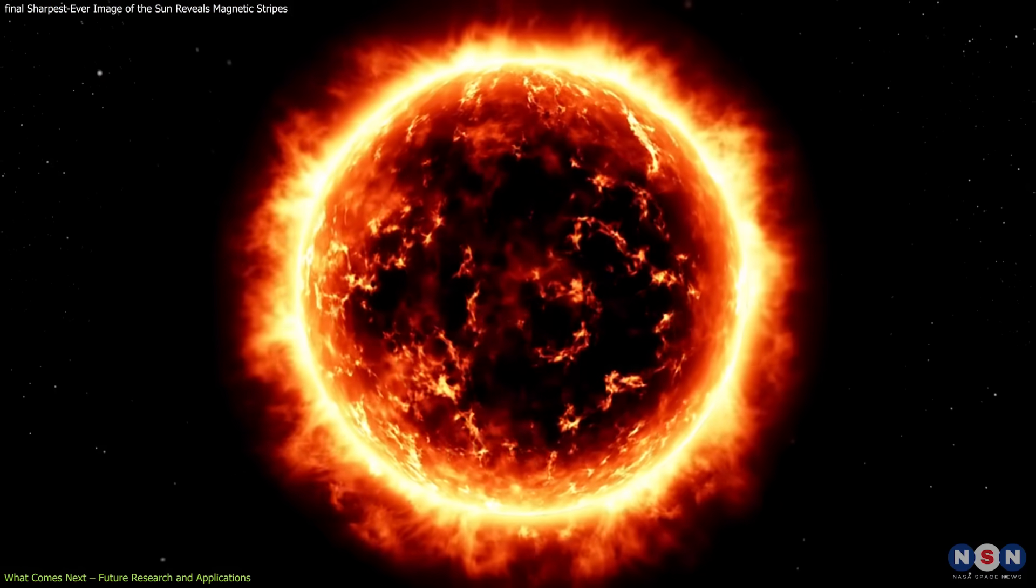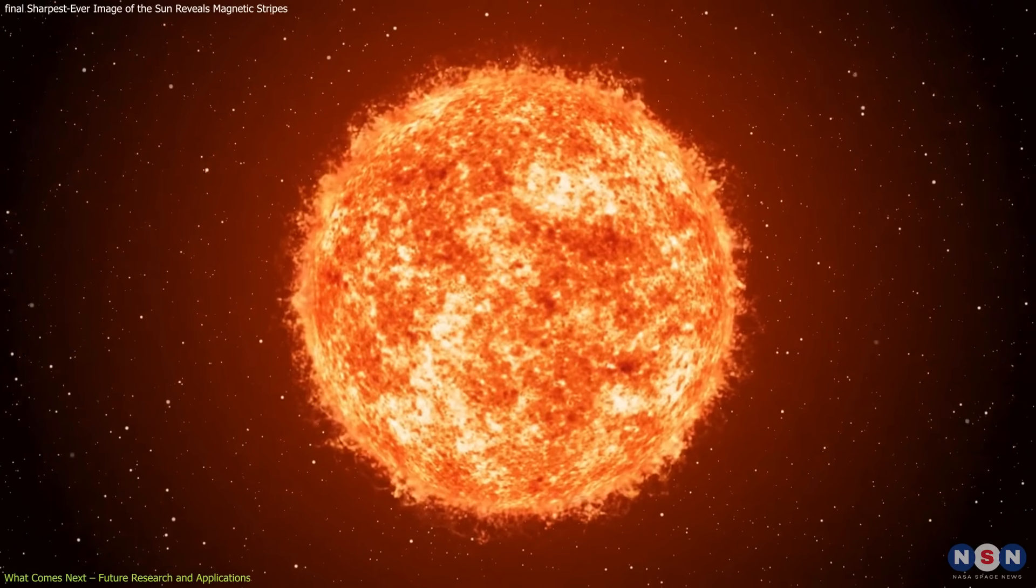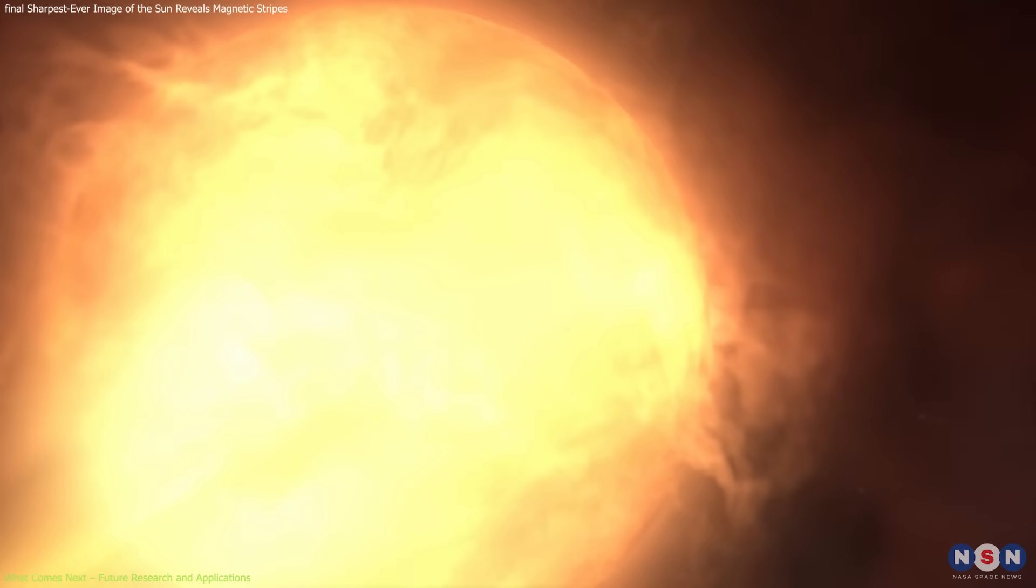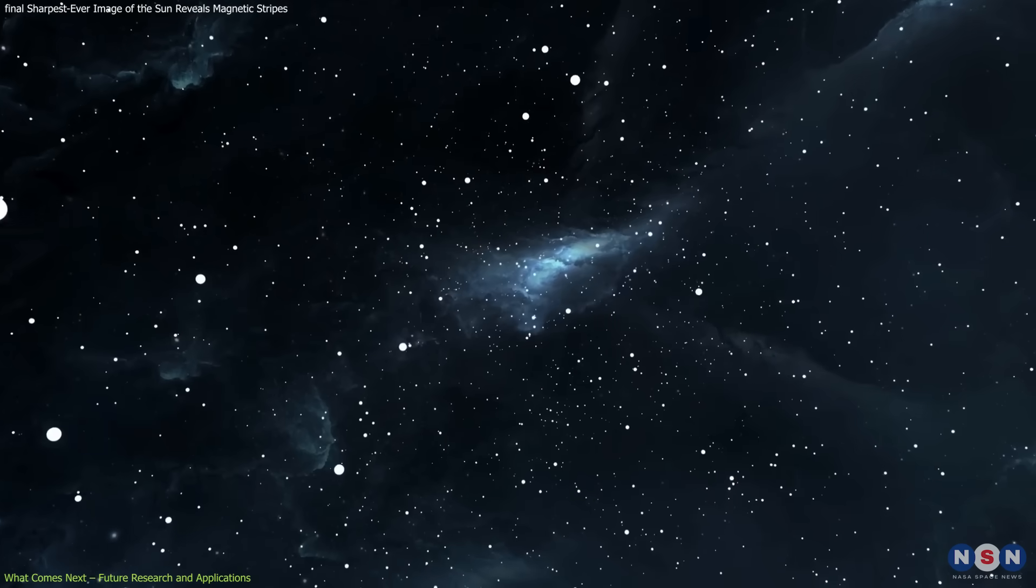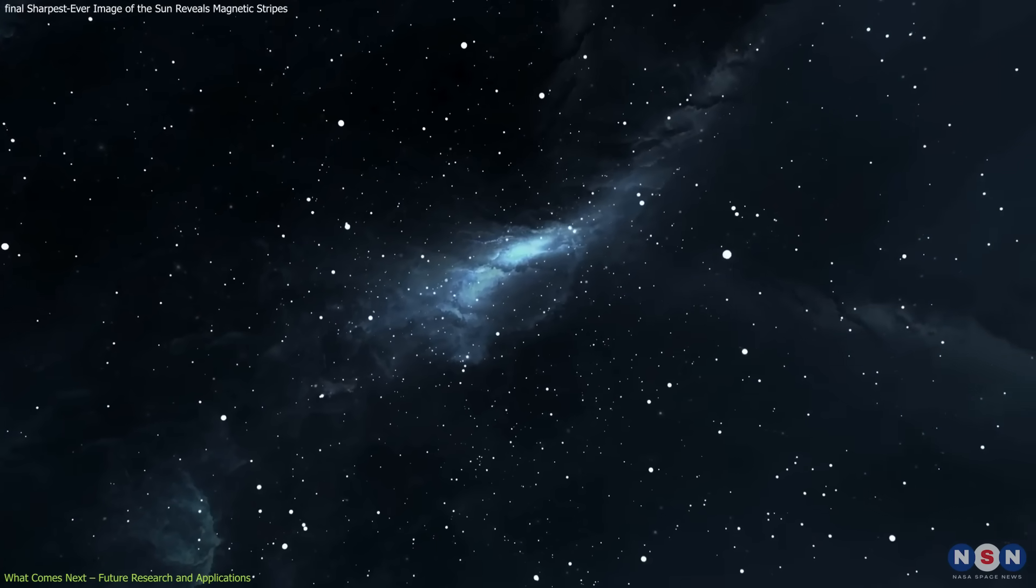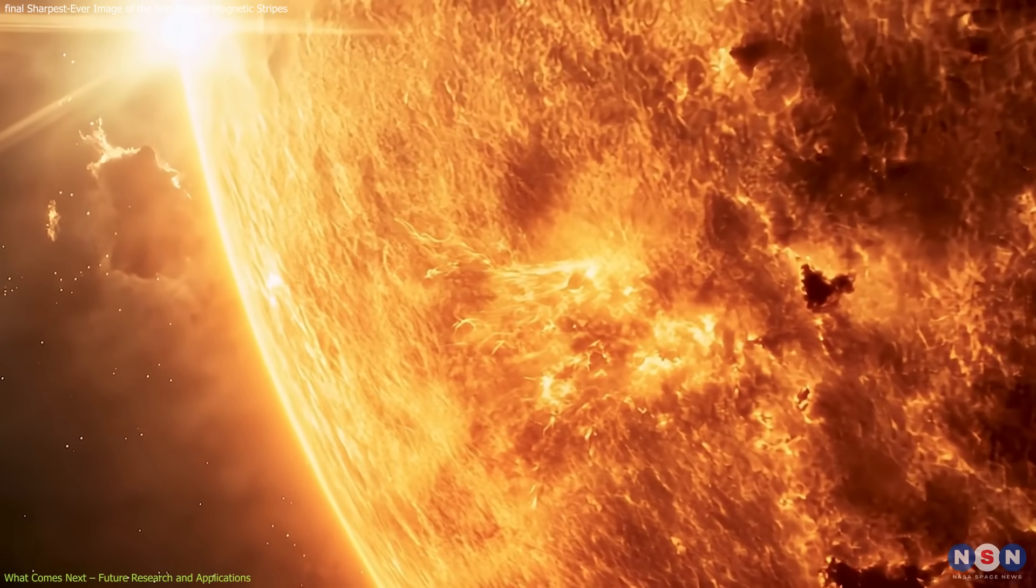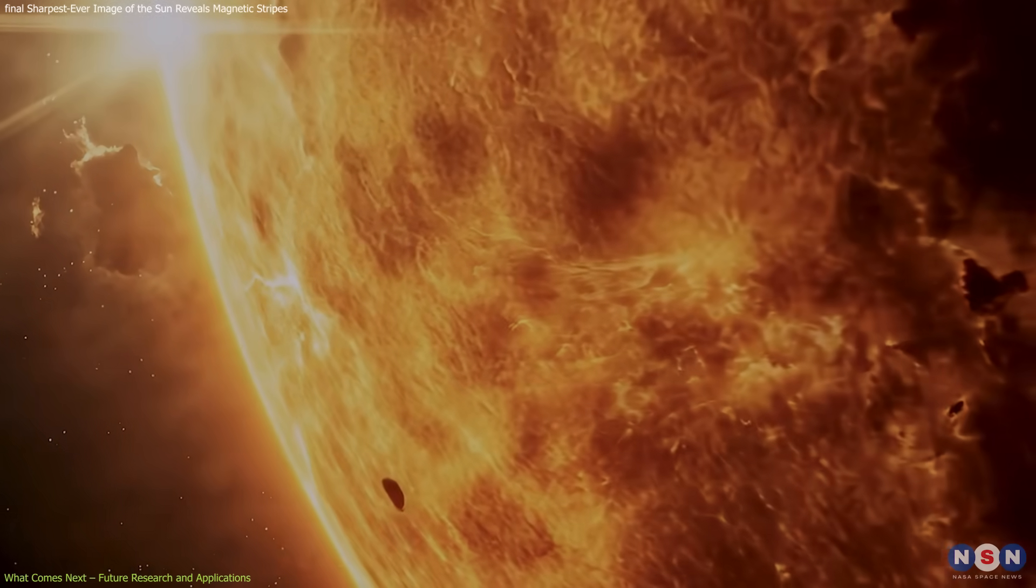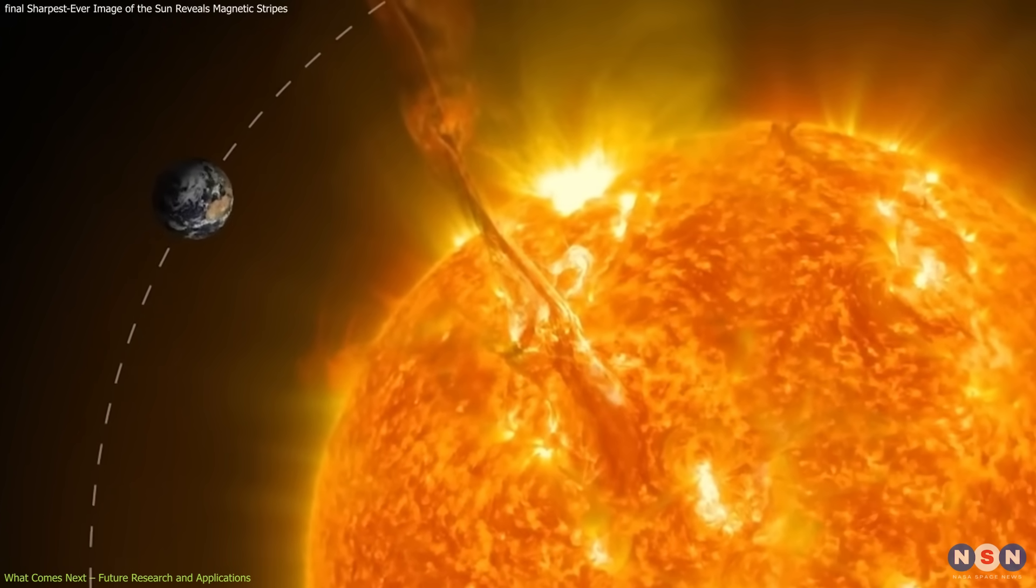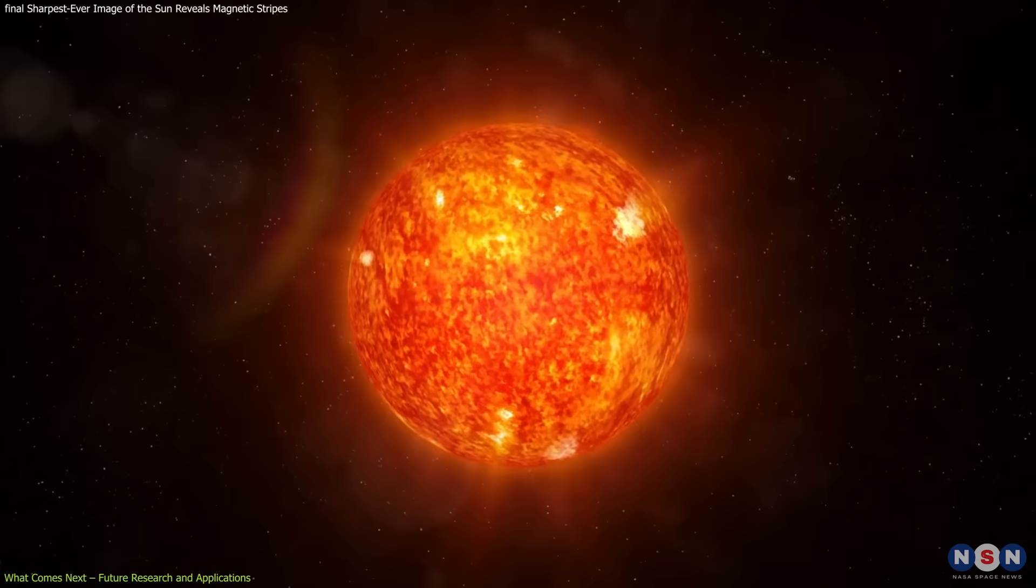This breakthrough isn't just about our Sun. It opens the door to studying magnetic textures on other stars too, especially those with intense activity. The same techniques could sharpen how we image distant stars or decode their light spectra. And here at home, understanding the Sun's magnetic architecture with this level of detail moves us closer to forecasting solar storms more accurately, protecting satellites, flights, and power systems from the chaos of space weather.